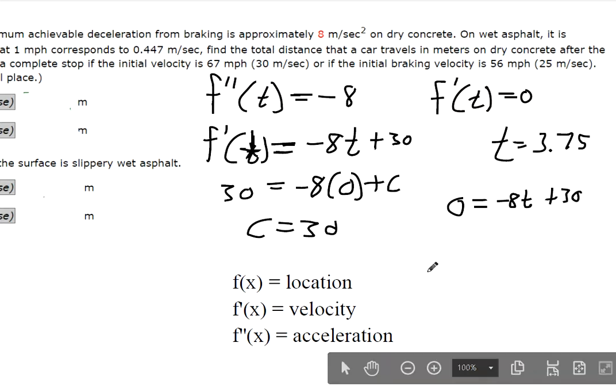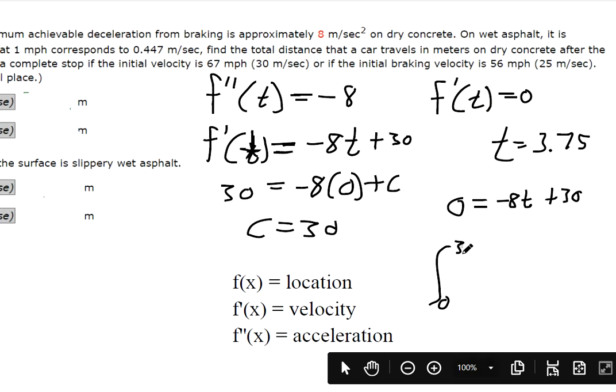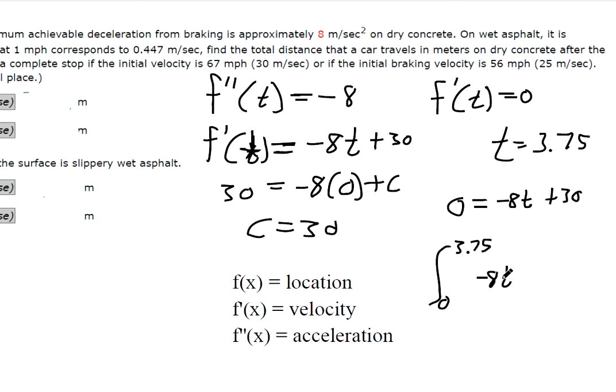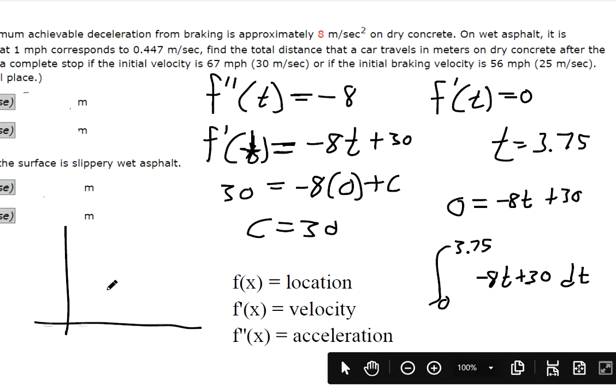So since we want to know total displacement, we want to find the integral from time t equals 0 to 3.75, to the time when we stop, of the velocity function. If you evaluate this definite integral, that should tell you how far you've traveled, right? Because the area under the curve of a velocity function is displacement. It tells you how far you've traveled.